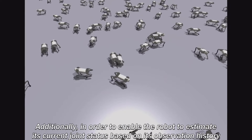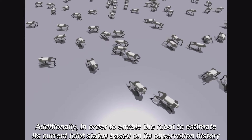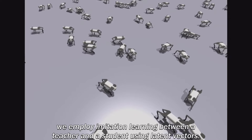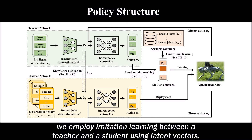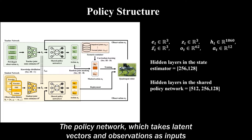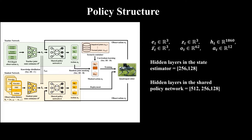Additionally, in order to enable the robot to estimate its current joint status based on its observation history, we employ imitation learning between a teacher and a student using latent vectors. The policy network, which takes latent vectors and observations as inputs, is a multi-layer perceptron and produces a 12-dimensional action as output.